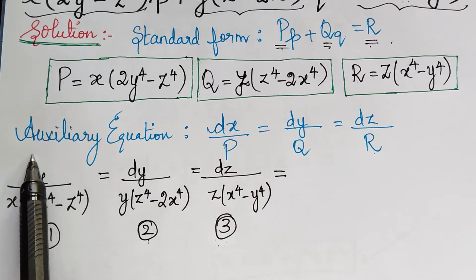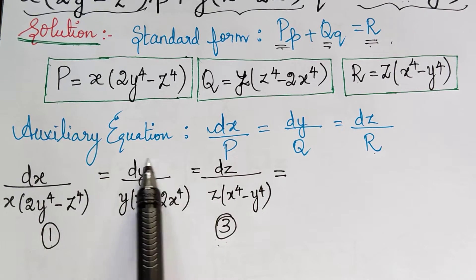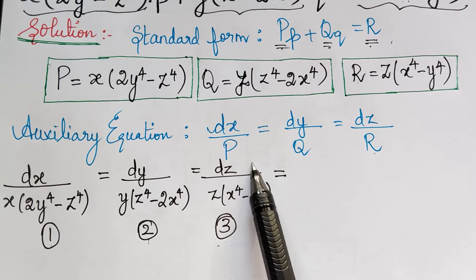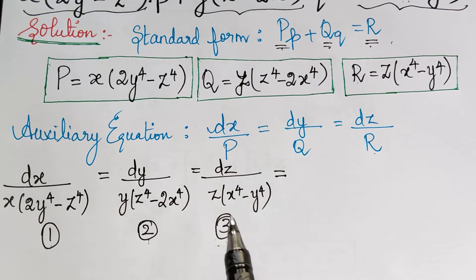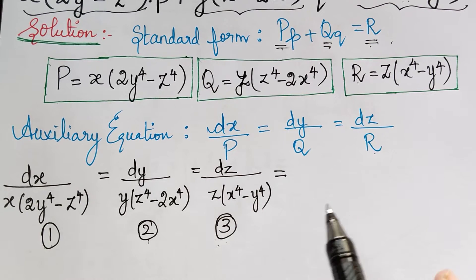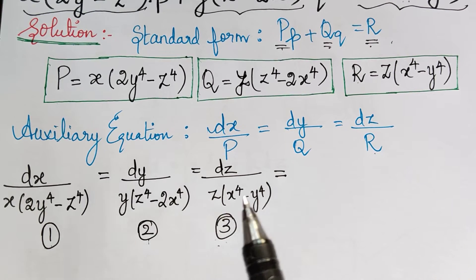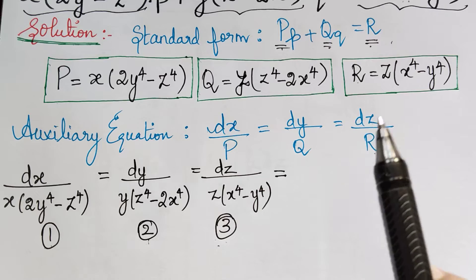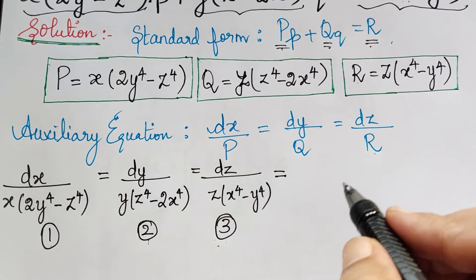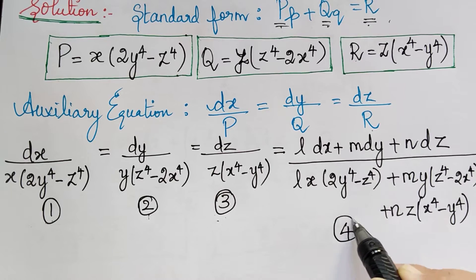The fourth ratio is found by multiplying the first ratio by L, the second ratio by M, and the third ratio by N, and adding them separately in the numerator and separately in the denominator. If you follow the previous problems we have already completed, you will understand it better. So I will just write the fourth ratio — this is the fourth ratio that we have obtained.